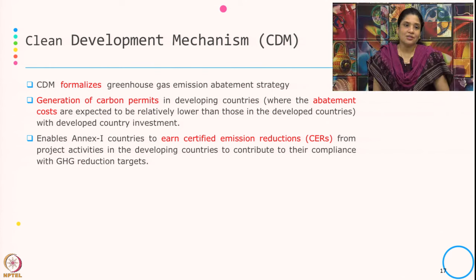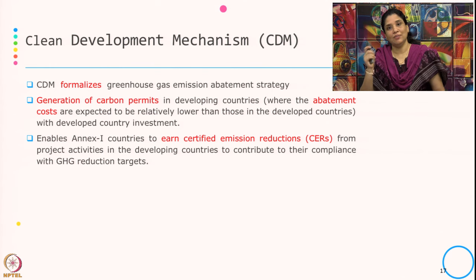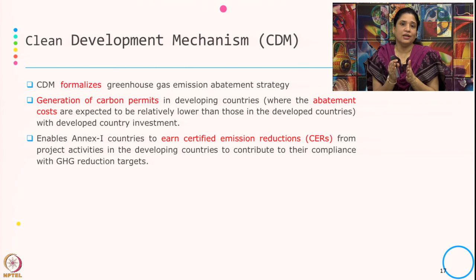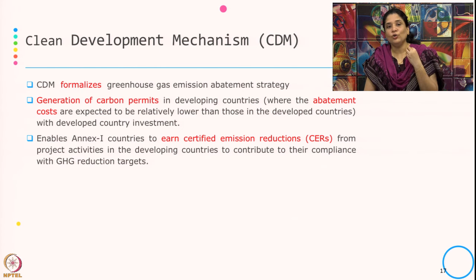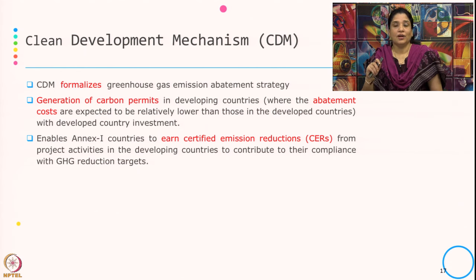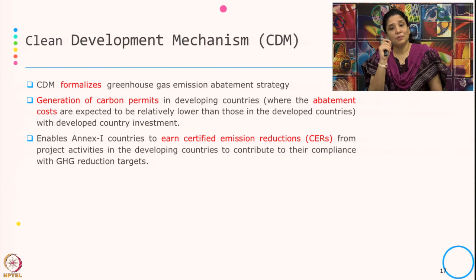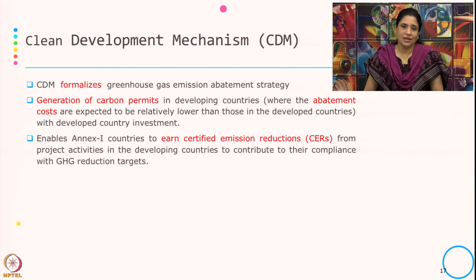As mentioned in the last class, CDM is part of the flexibility mechanism given by the Kyoto Protocol. The flexibility in terms of operational flexibility is given to the developed country or the Annex 1 country on how to achieve or meet their emission reduction target. Under CDM, the developed country can invest in any developing country where the cost of abatement is low, and the carbon permits generated from that investment can count toward their GHG reduction target.